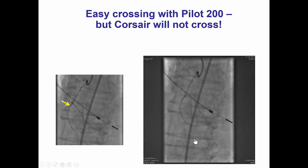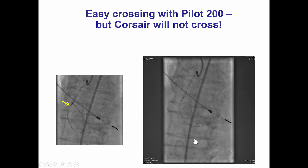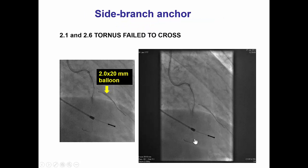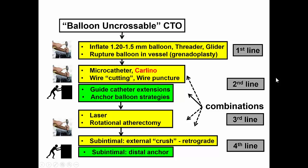As we expected, the lesion was very easily crossed with the Pilot 200. However, we could not cross with the Corsair microcatheter or any other small balloon. We tried the Tornus, both the 2.1 and the 2.6, but were also unsuccessful. There was a large marginal branch on which we advanced a balloon doing a side branch anchoring balloon, but still could not advance the microcatheter or balloon past the mid part of the right coronary artery.